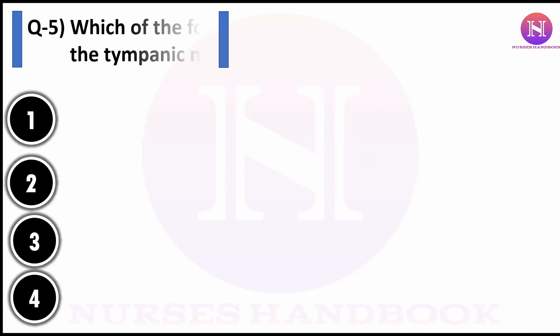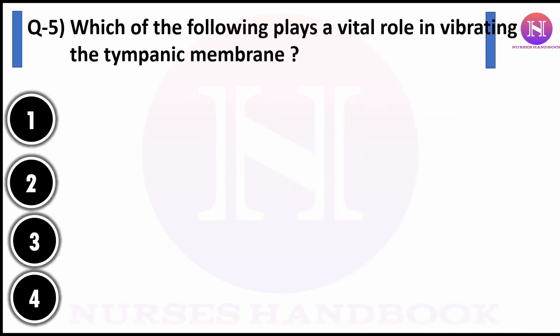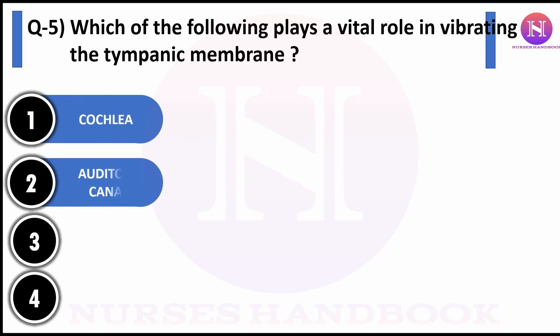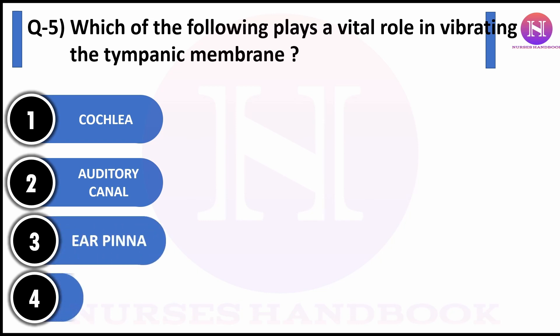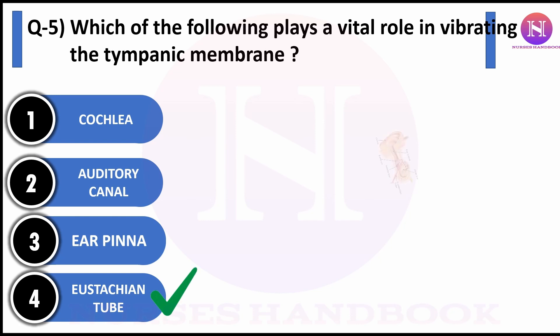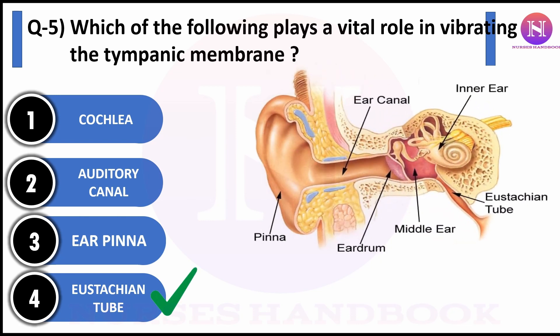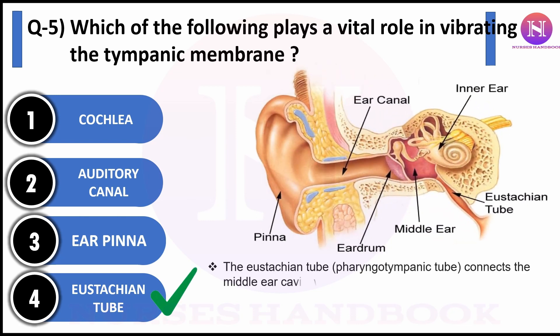Question number five: which of the following plays a vital role in vibrating the tympanic membrane? Option one: cochlea, option two: auditory canal, option three: ear pinna, option four: Eustachian tube. The correct answer is Eustachian tube.